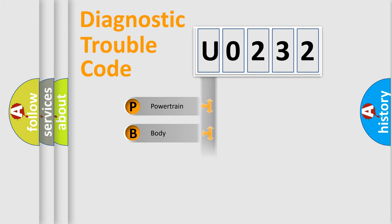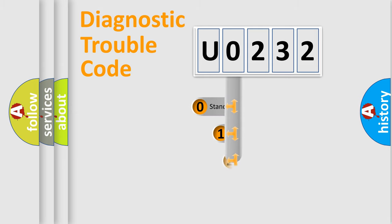Powertrain, Body, Chassis, Network. This distribution is defined in the first character code.